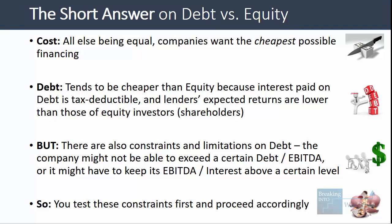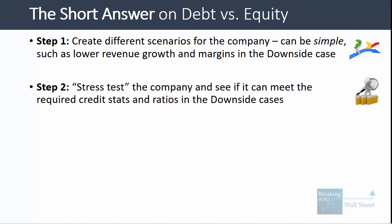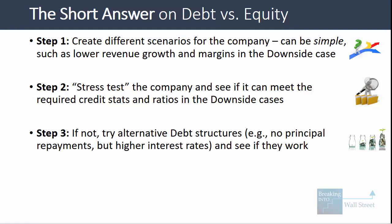To give a company a recommendation on debt versus equity, you have to test these constraints first and then proceed accordingly. Step one is to create different scenarios: lower revenue growth and margins in the downside case, growth and margins closer to market expectations in the base case, and above-market expectations in the upside case. You could also have an extreme downside case with the company's business declining due to market conditions or mismanagement. Then stress test the company in these scenarios and see if it can meet its required credit stats, ratios, and other requirements in the downside cases.